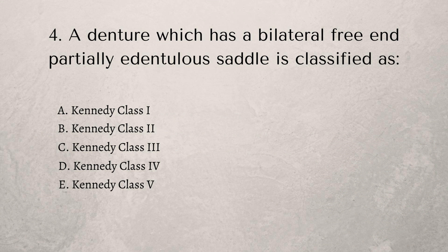Number four — another denture question. A denture which has a bilateral free-end partially edentulous saddle is classified as... these are Kennedy classifications. These come up all the time — they're always asked in part one and part two as well. It's really important to know these Kennedy classifications because they're easy points to score. Know classes one through four and how to apply modifications on those classes. A bilateral free-end saddle is Kennedy class one.